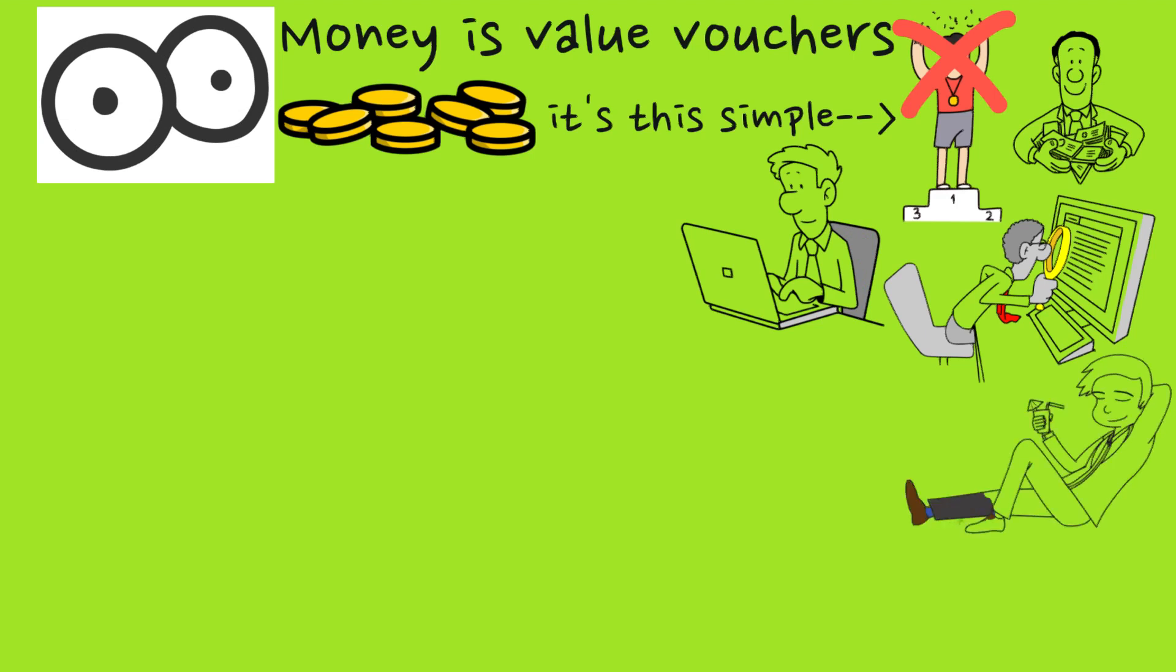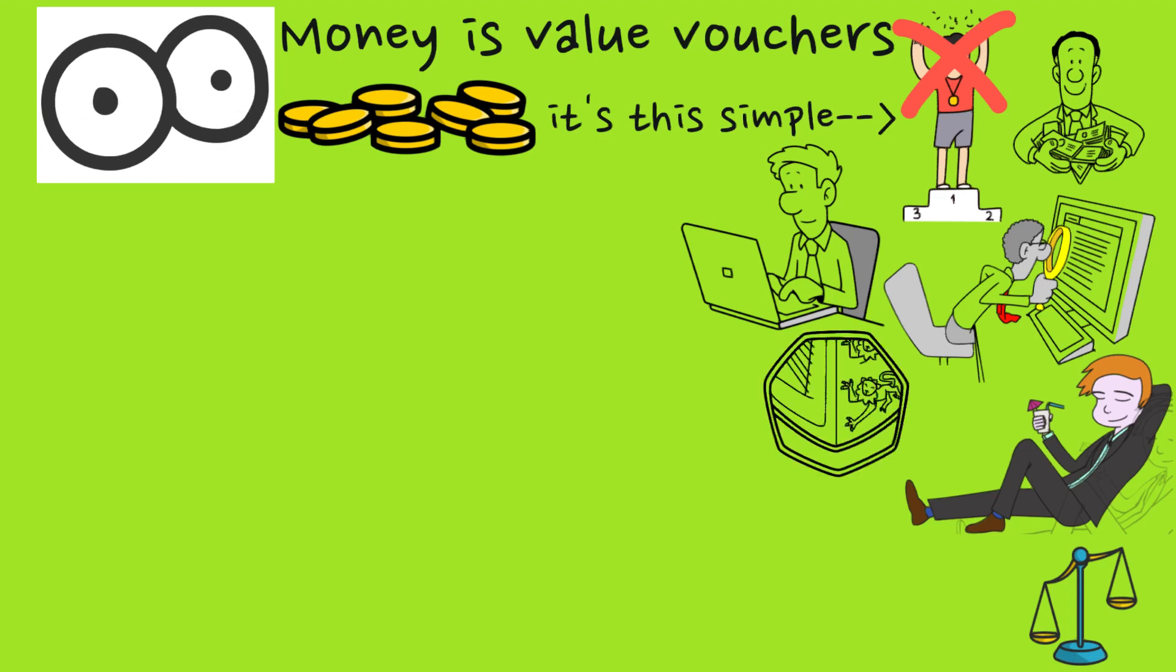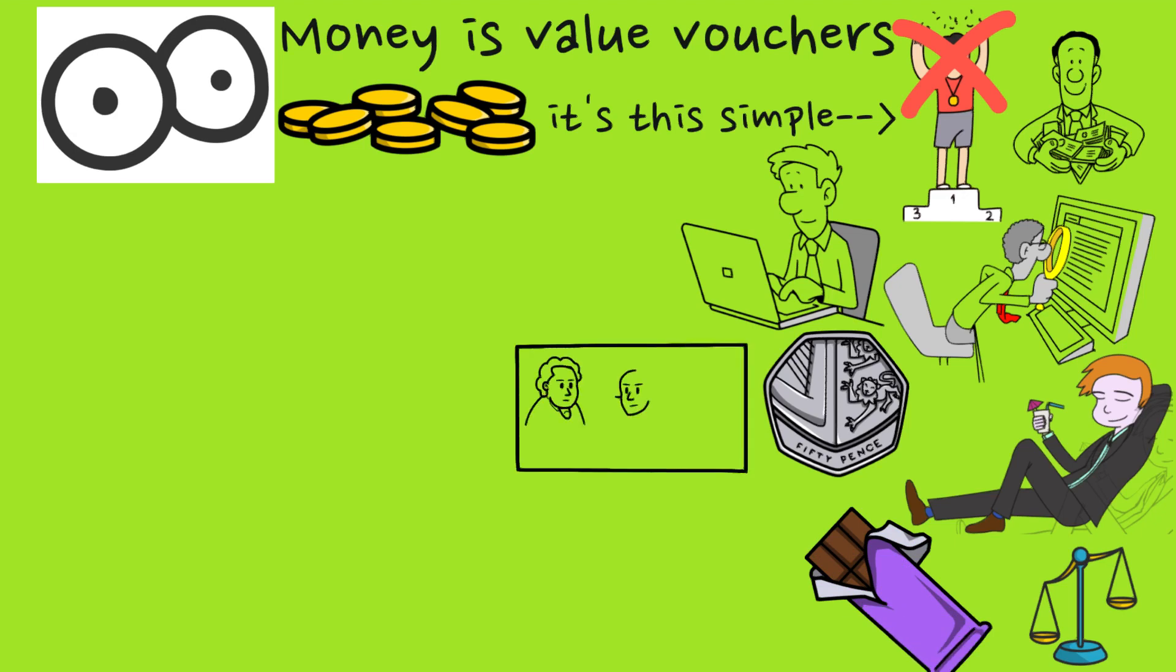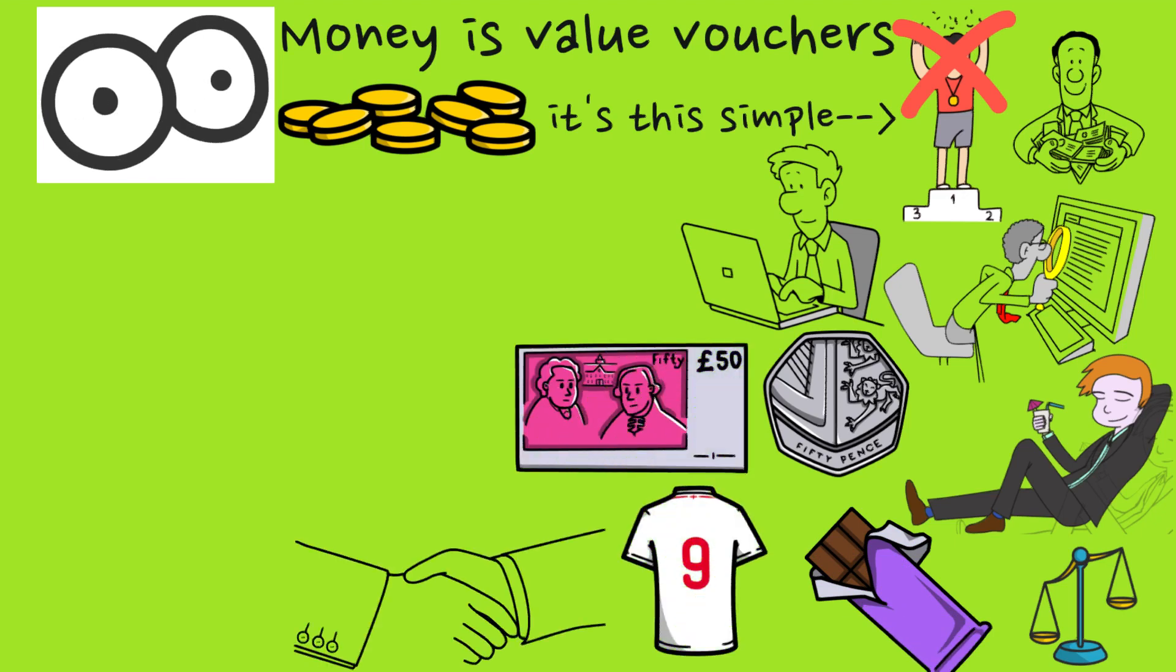Think about all the wealthy business owners - it all comes from the fact that they provide value. Your 50p is worth a 50p chocolate bar, your £50 is worth a t-shirt. It's an exchange of money for value, so the more value, the more money. It's a simple equation.